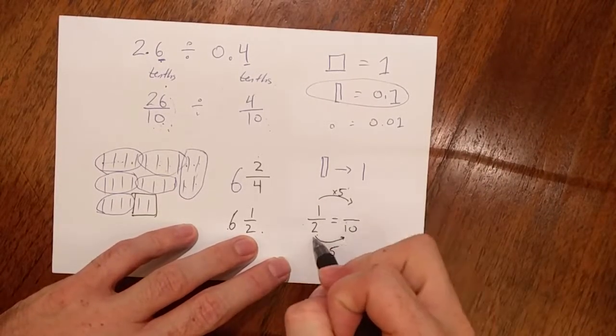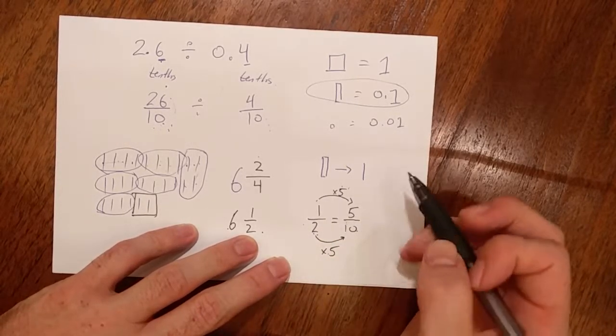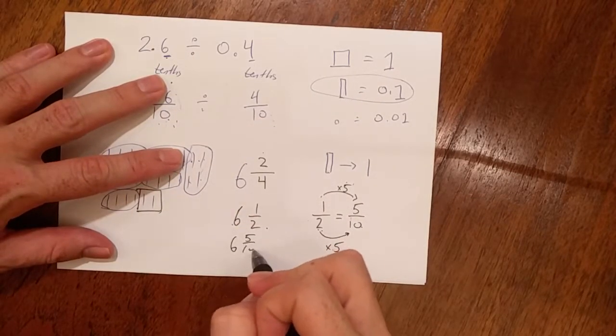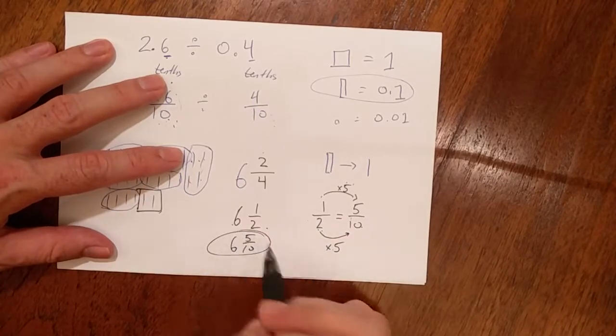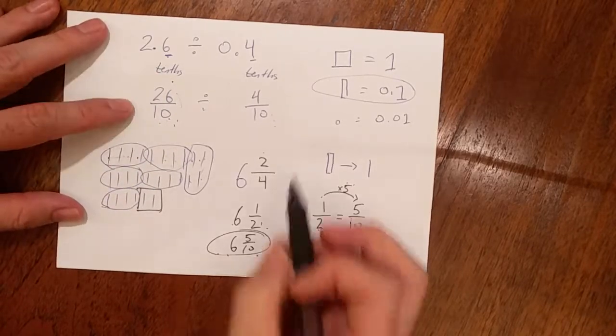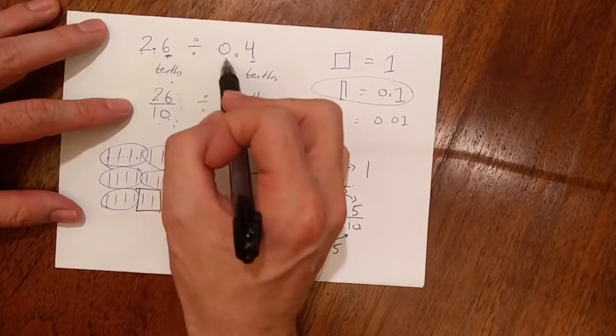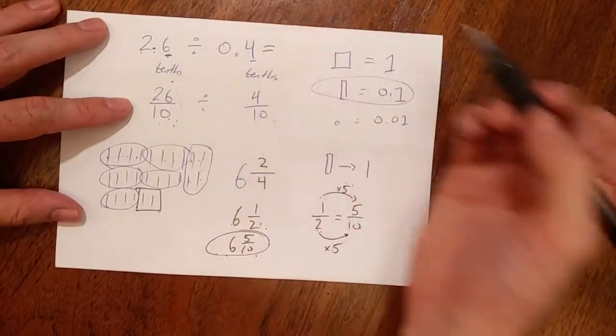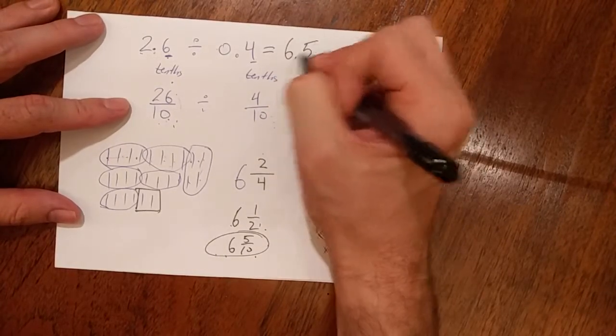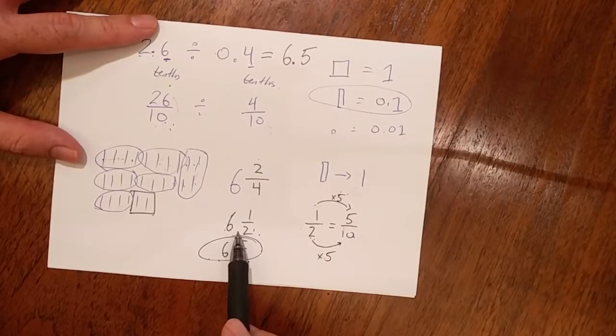So here's the ratio is the same. Well, two times five is ten. One times five is five. So I can safely say that six and a half is the same as six and five tenths. Ooh, six and five tenths. Can I write six holes in five tenths as a decimal? Yeah, of course. I can confidently say that 2.6, two holes in six tenths split up into groups of four tenths. Well, how many groups of four tenths do I have? I have six groups and I have five tenths left over or six and a half groups. Six and a half groups.